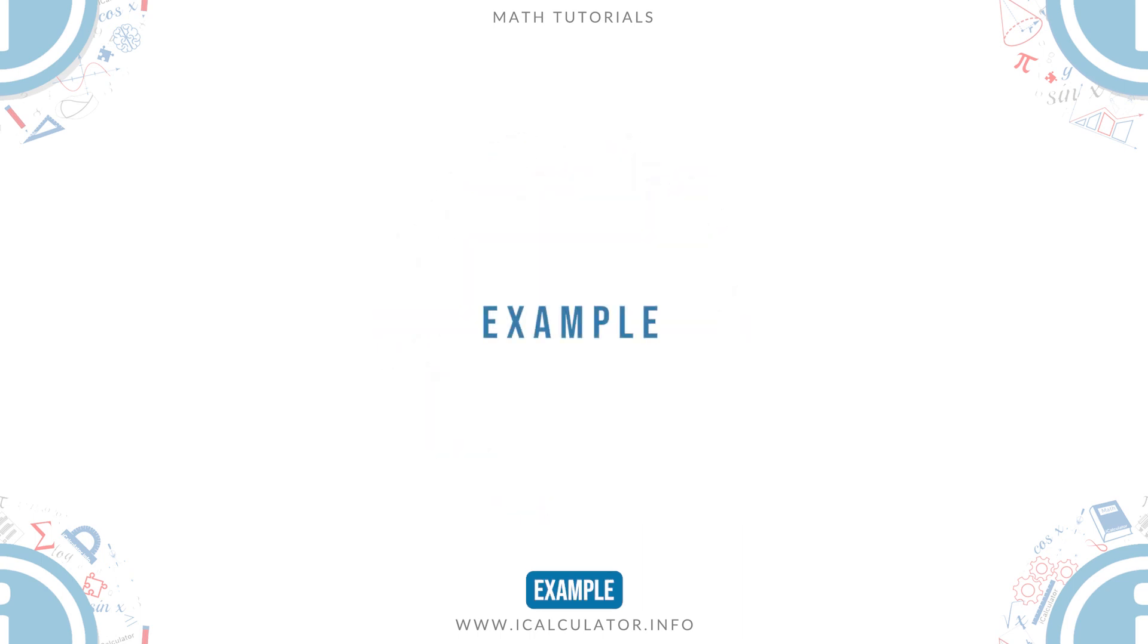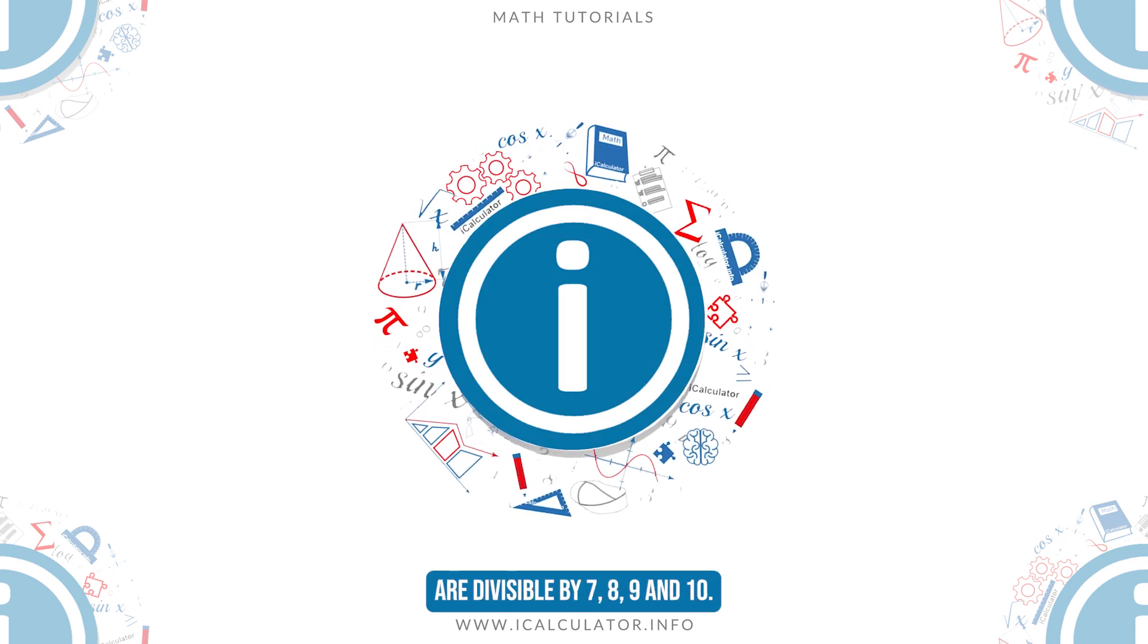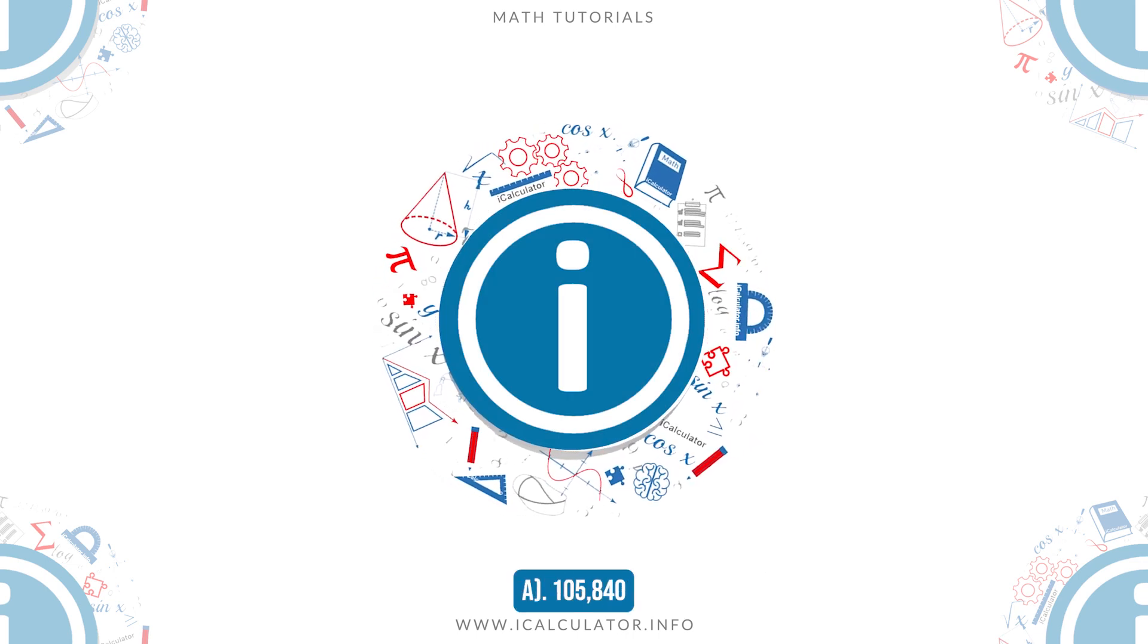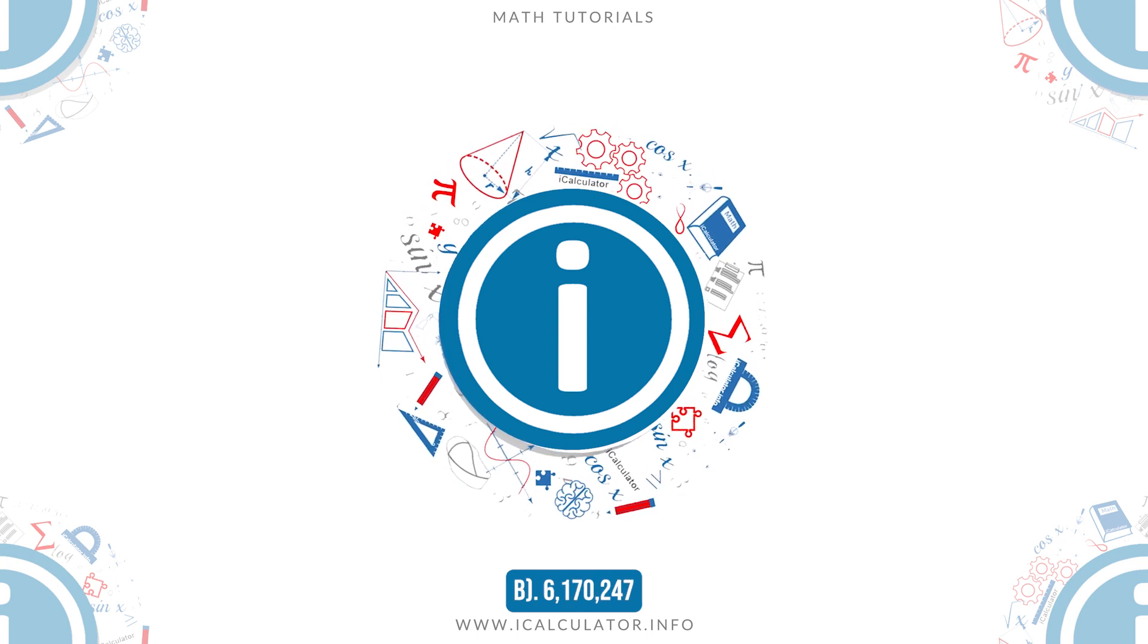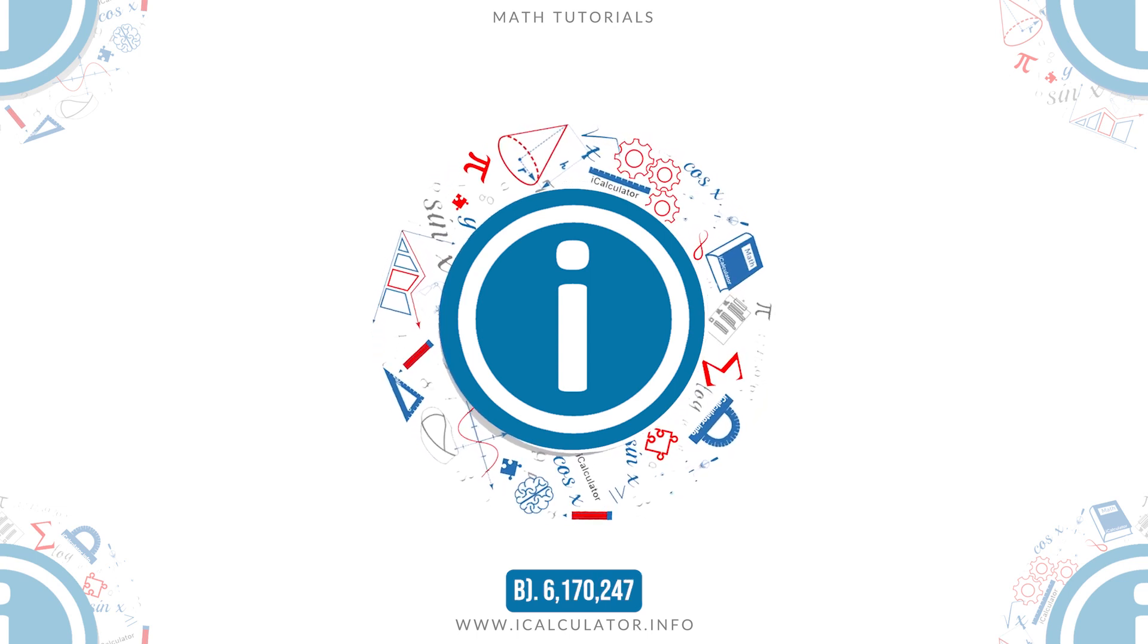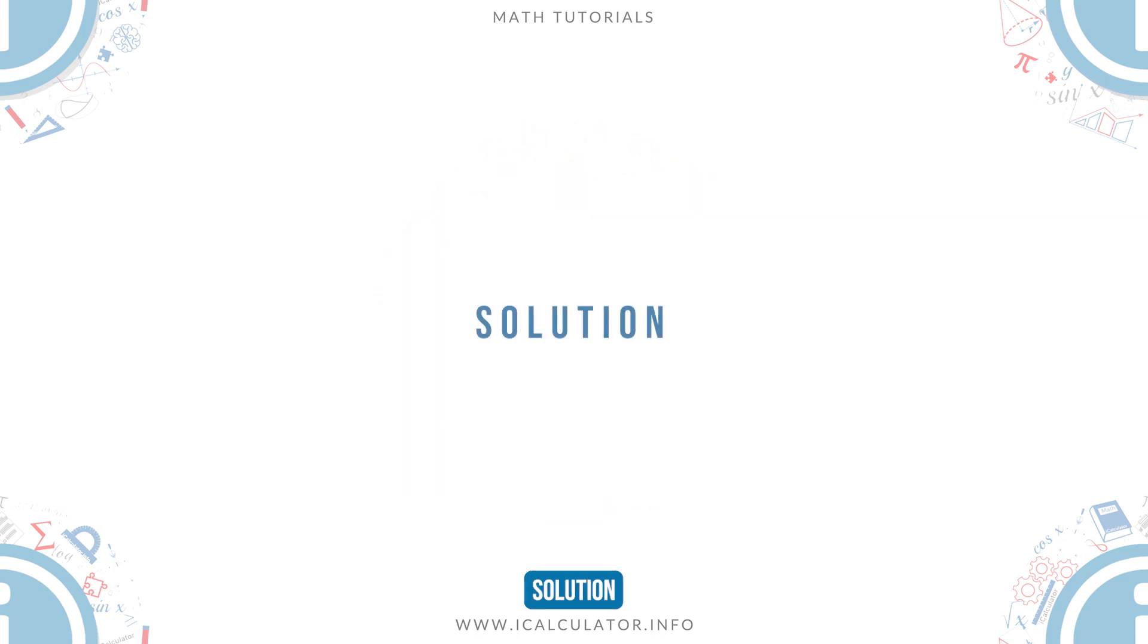Example: Check whether the following numbers are divisible by 7, 8, 9, and 10. A. 105,840 B. 6,170,247. Solution: